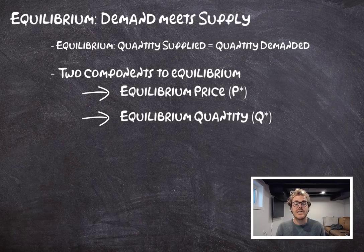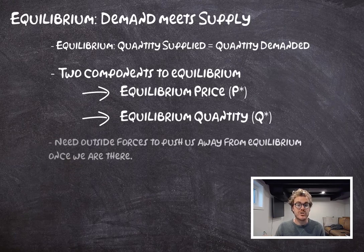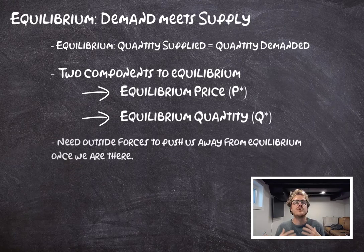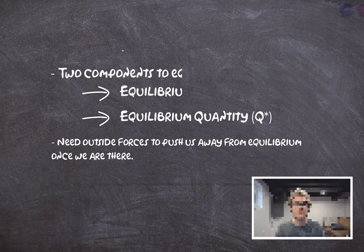It's called equilibrium because if we're not at that point, there's going to be pressure — either downward pressure on price or upward pressure on price — until we get to equilibrium. But once we're in equilibrium, we need outside forces to push us away from that point. So let's take a look at this graphically.